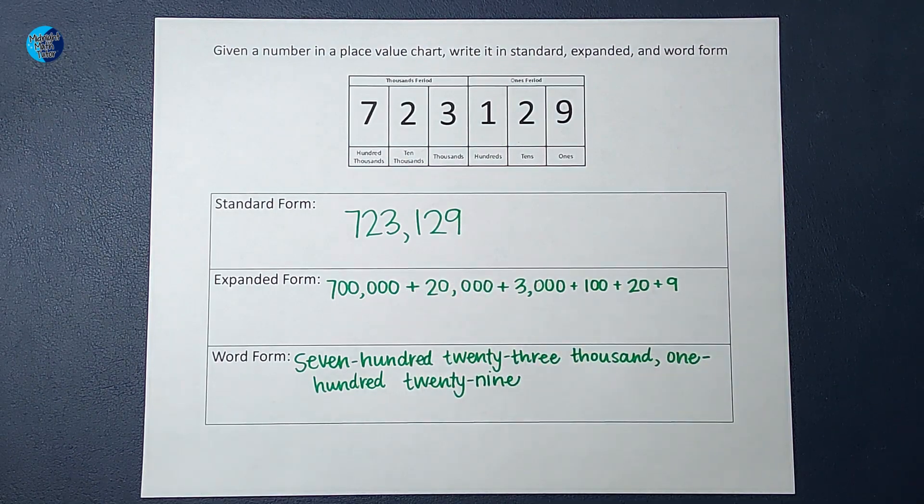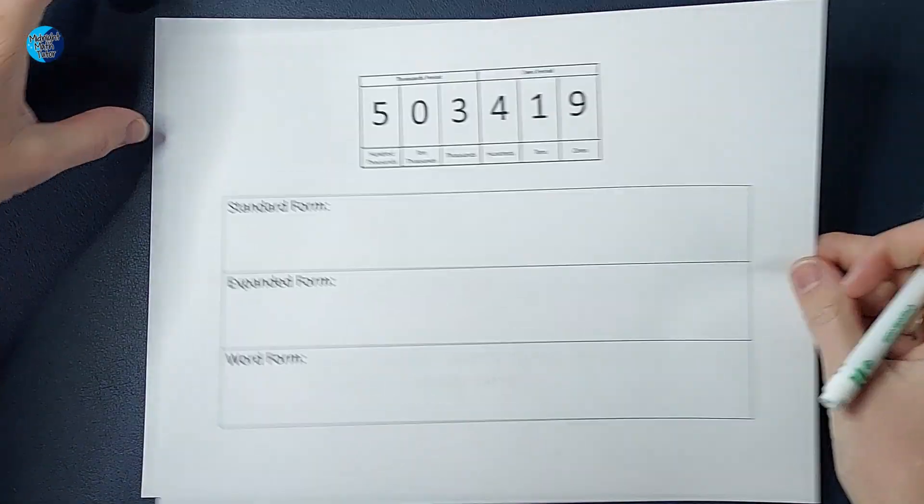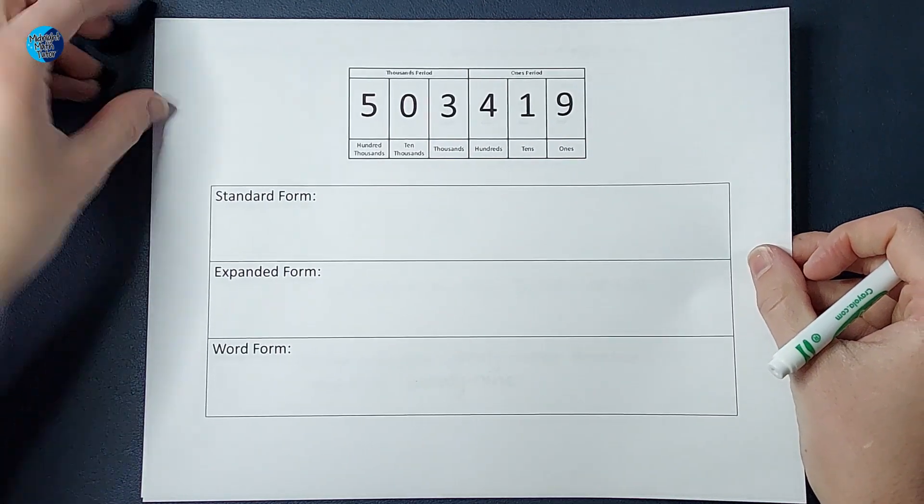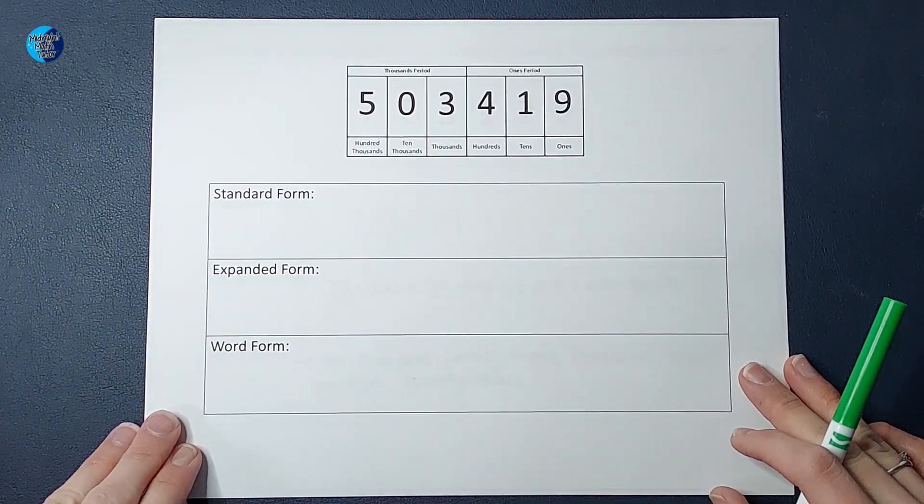So, there is the word form. Let's go ahead and do one more example because they're probably going to start introducing some zeros to help you understand what it means when there's a zero in our number.